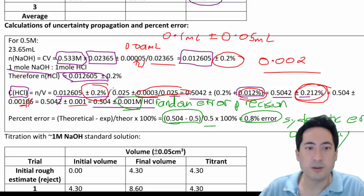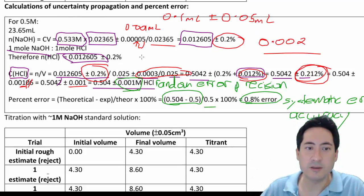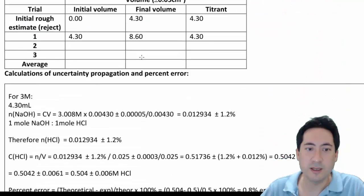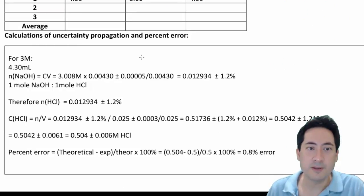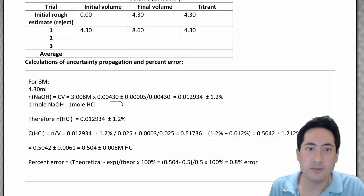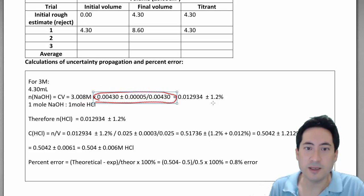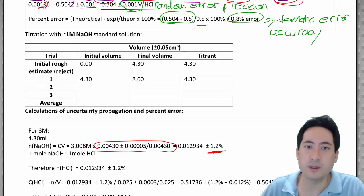Now I'm going to go through a little bit quickly the exact same thing you do for the 3 molar. Now let me just look at what the difference is here. The difference is I had 3 molar here, and I had less volume. And so what that ended up meaning was the uncertainty here is more significant.